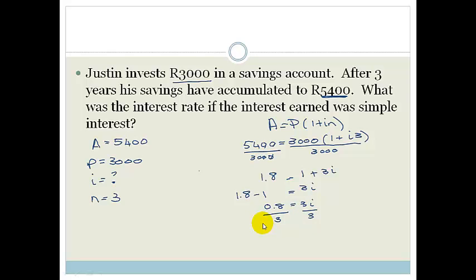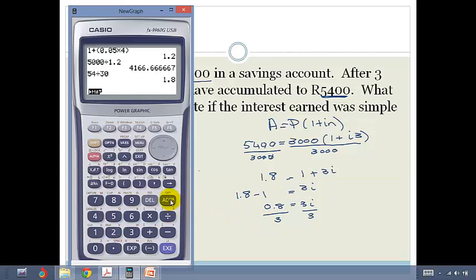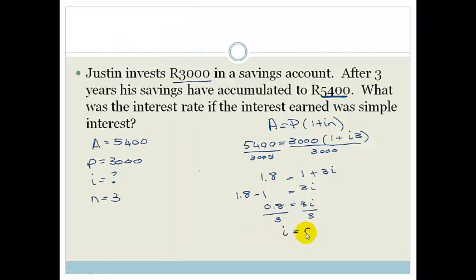So again, we're going to get out our calculator, and we're going to clear it. And then that's 0.266, which is 0.27. So therefore, the i equals 0.27. But remember, this is of the decimal type. So what we need to do is change it into percentage. And to change to percentage, we have to times this by 100 over 1, which becomes 27%.